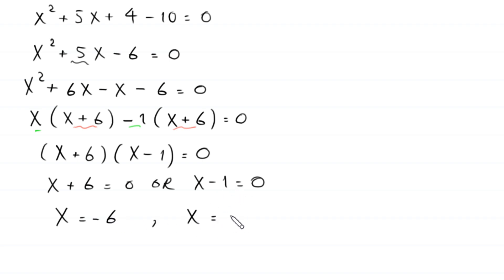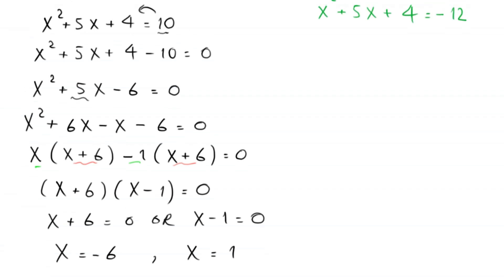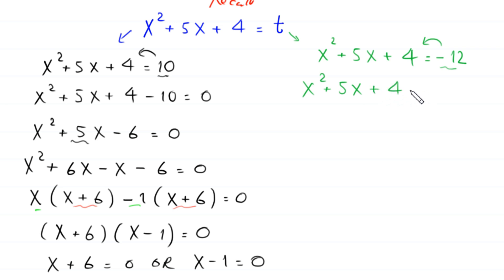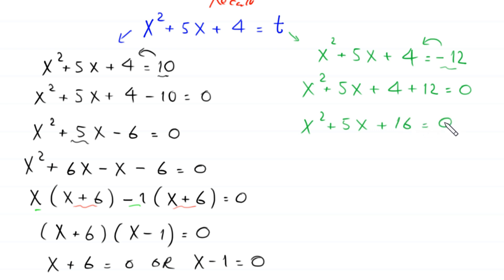From here, either x+6 = 0 giving x = −6, or x−1 = 0 giving x = 1. Now from the second equation (t = −12), moving −12 to the left-hand side gives x²+5x+4+12 = 0, which becomes x²+5x+16 = 0.